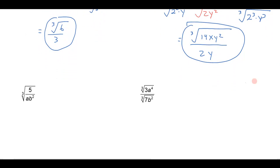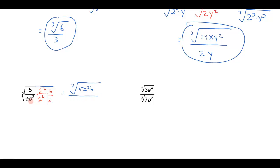Alright, so let's do another example like that. If I had the cube root of 5 over ab squared, I could just think to myself: if I already have an a to the first power and I want to take the cube root and get rid of the cube root in the denominator, I'll need two more a's. I'll multiply by a squared over a squared so that'll give me a cubed. And then I've already got two b's — a b squared — so let's multiply by b over b, that'll give me b cubed. So this is going to give me the cube root of 5a squared b in the numerator, and I'll get the cube root of a cubed, which is just a, and the cube root of b cubed, which is just b in the denominator. And I'm done.